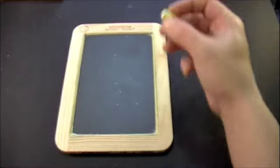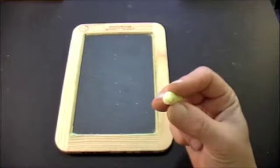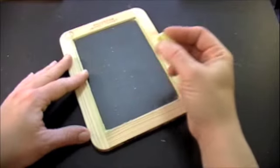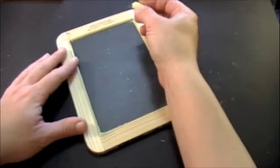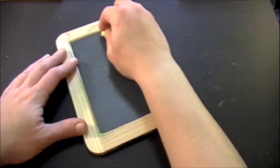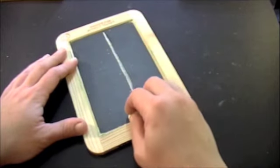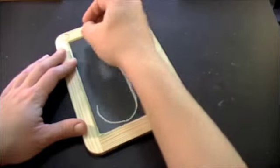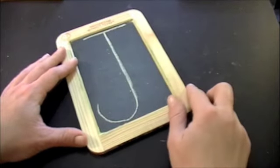Let's write a capital letter J. Start with a chalk and a nice tripod grasp, open web space, hold the slate board with your helper hand. Start at the top center, big line down, then curve. Jump back to the top and a little line across.